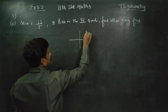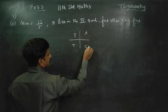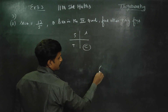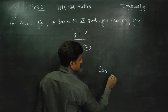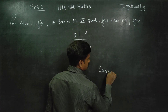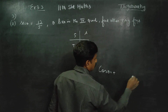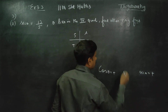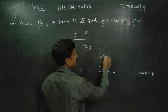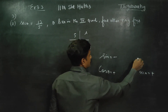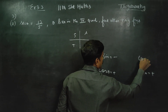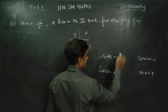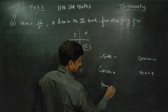In the fourth quadrant, cos is positive and secant theta is positive. Sin is negative, sin theta is negative. Tan theta is also negative.